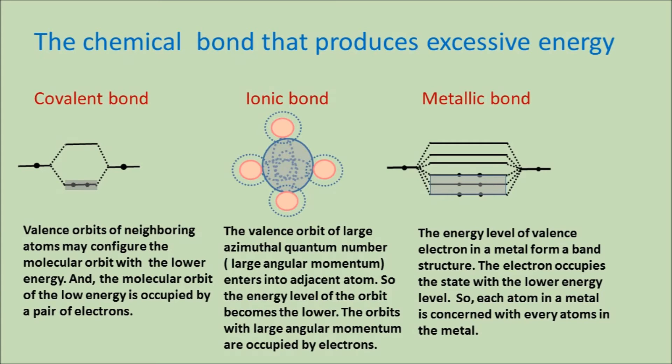The covalent bond is explained as follows: valence orbits of neighboring atoms configure molecular orbits with lower energy, and the molecular orbit of low energy is occupied by a pair of electrons. The ionic bond is explained as follows: the valence orbit of large azimuthal quantum number — large angular momentum — enters into an adjacent atom, so the energy level of the orbit becomes lower, and the orbits with large angular momentum are occupied by electrons.